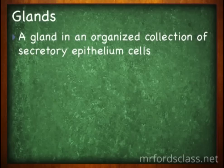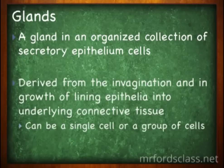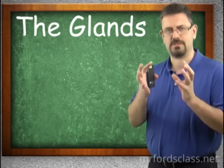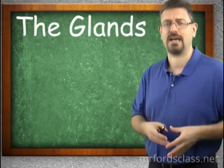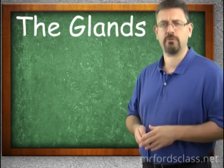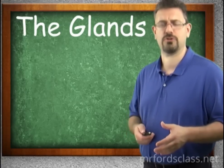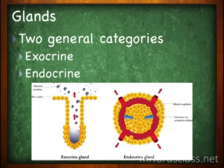A gland is an organized collection of epithelial cells that secrete stuff. Remember from our epithelial tissue section — they are derived from the invagination and ingrowth of lining epithelium into underlying connective tissue. Epithelial cells group in and then they are wrapped with connective tissue. This can be a cell or a group of cells. They can either be exocrine glands, which have ducts, or endocrine glands, which are ductless.